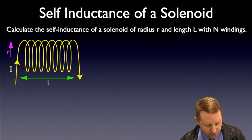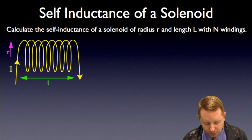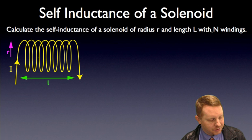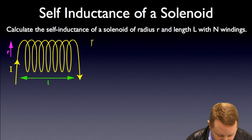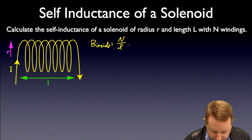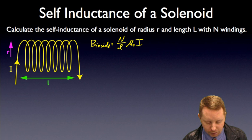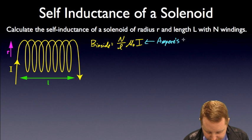Let's take a look at the self-inductance of a solenoid. We're asked to calculate the self-inductance of a solenoid of radius R and length L with n number of windings. To begin with, we know that the magnetic field inside that solenoid is equal to the number of windings divided by the length times mu-0, the permeability of free space, times the current flow. If you don't know where we got that, go back and review our Ampere's Law video where we derived that specifically.